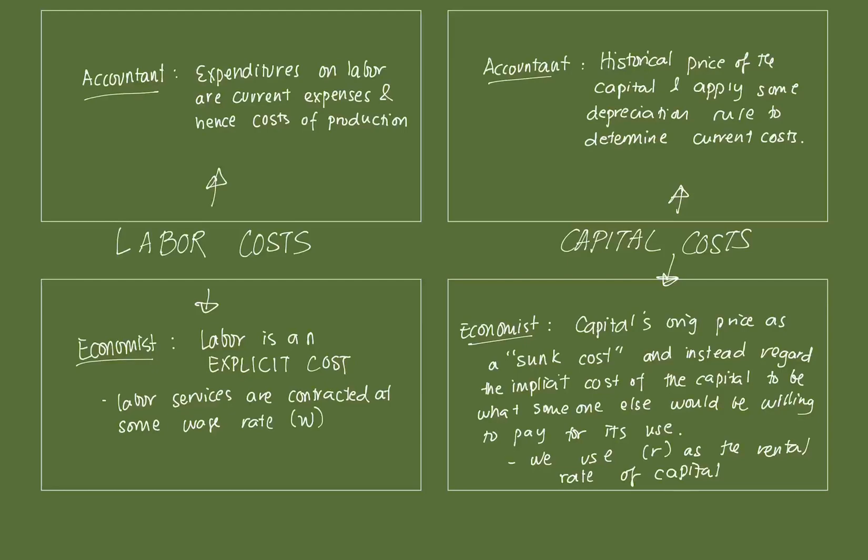Firms contract labor services at some wage rate, which we'll denote as W. It's assumed that this is also what the labor could earn in alternative employment. That's not too realistic in the real world because we know there are varying wage rates, but for a simplistic, perfectly competitive model, we'll first assume that the wage rate paid in one job is the same as in another. Essentially, the value of labor is determined by that wage rate.